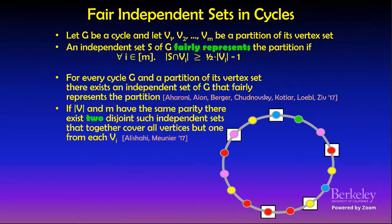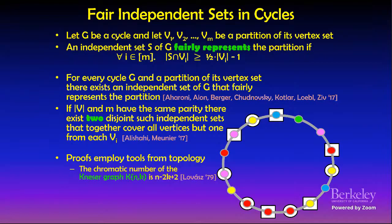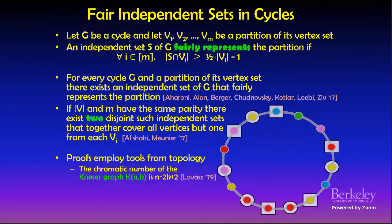In the work of Alon, Berger, Chudnovsky, Kotlar, Lebel, and Zil, it was shown that for every cycle and every partition of its vertex set, there exists an independent set that fairly represents the partition. In a later work of Alishai and Munir, it was shown that if the number of vertices and the number M of parts have the same parity, not only does such an independent set exist, but there are even two disjoint such independent sets that together cover all vertices but one from each V_i.